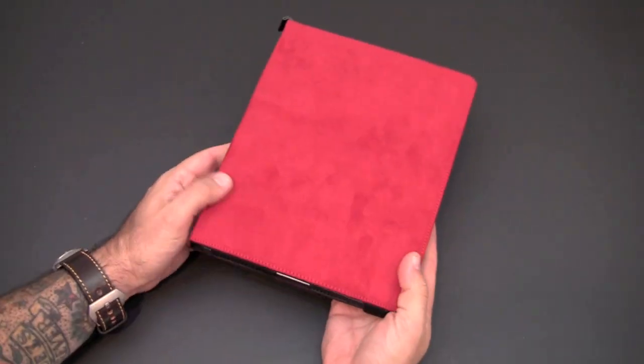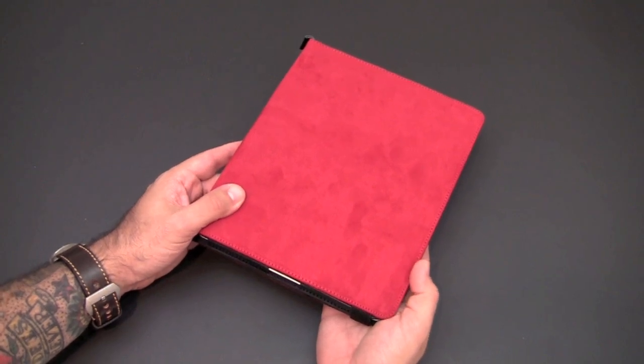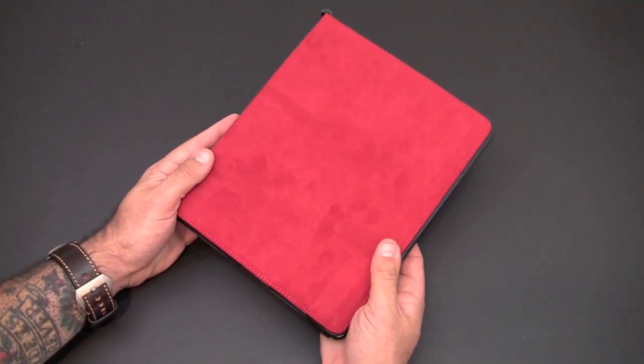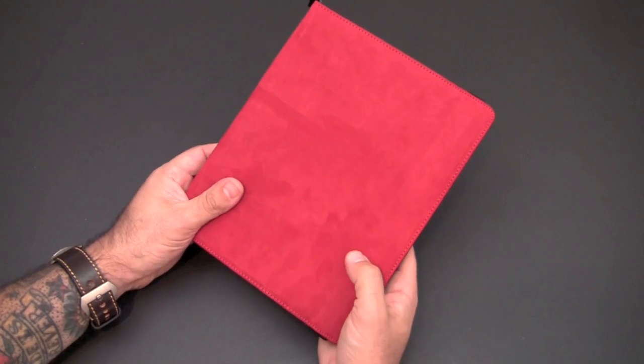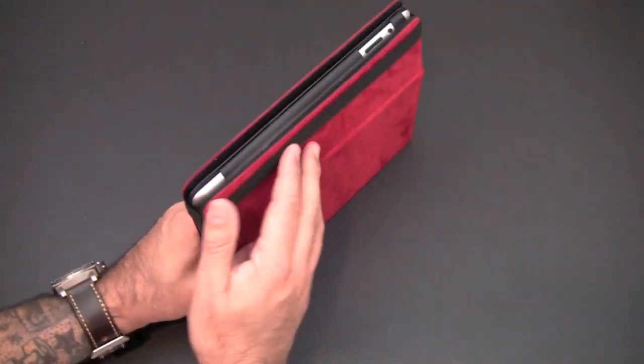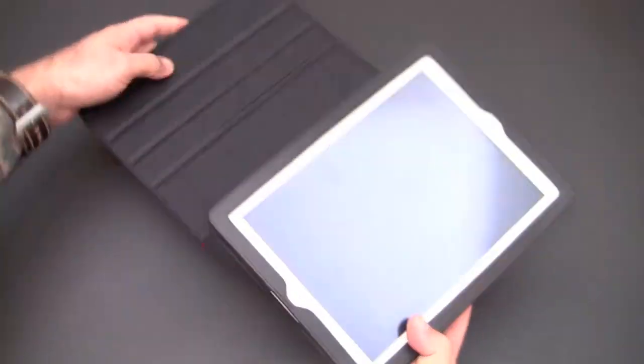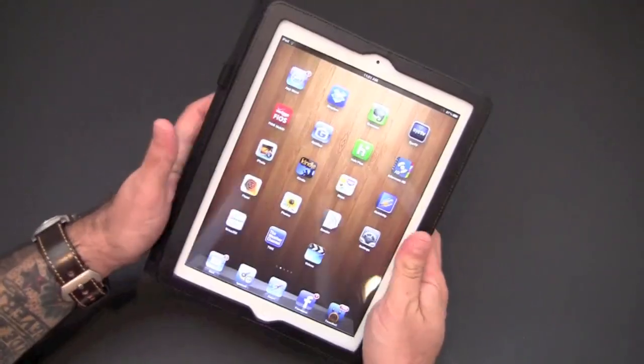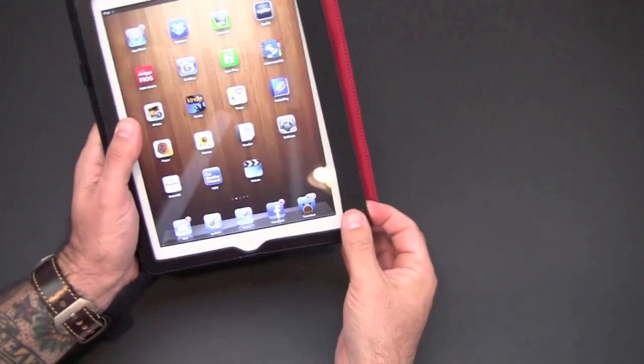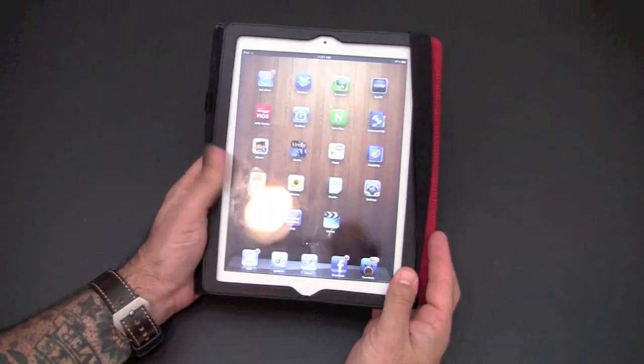I really like this because it's kind of a problem when you have a folio-style case that works with the sleep-awake button. Usually when you're carrying it, the cover is sliding all around, activating that sleep-awake function. This strap, number one, prevents that from happening and you can also consequently use it to keep the strap secure around the front to keep the flap from flapping around as well.